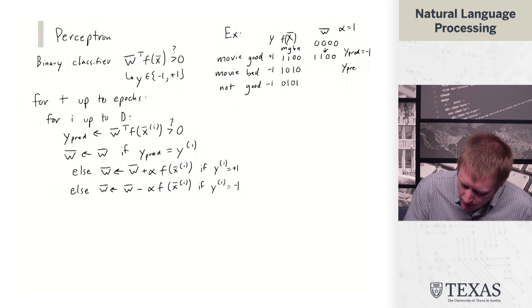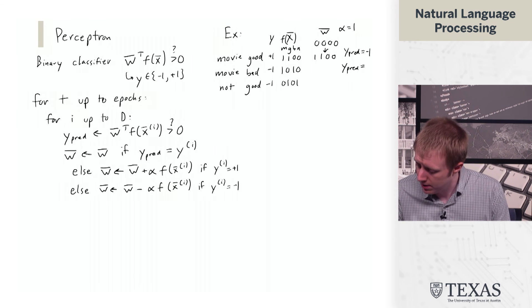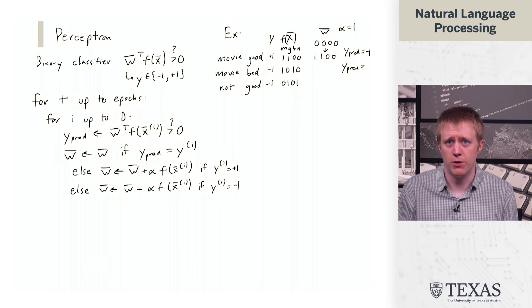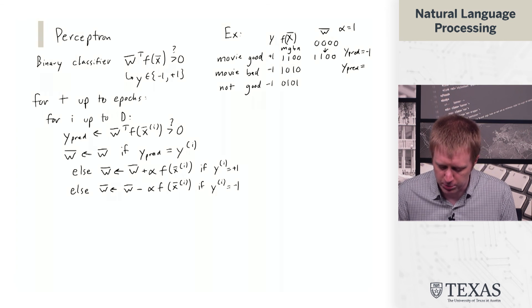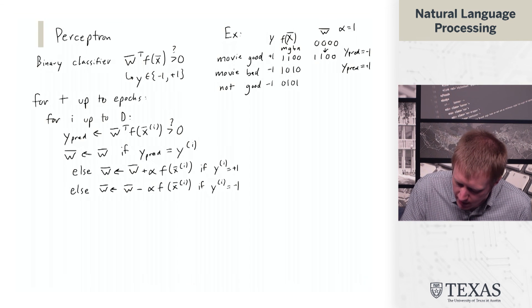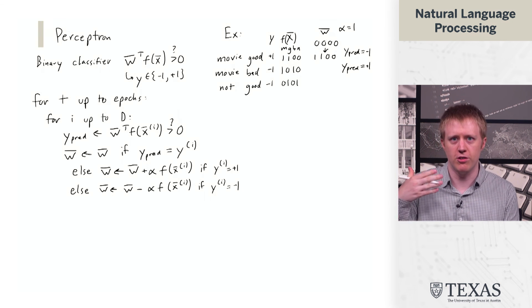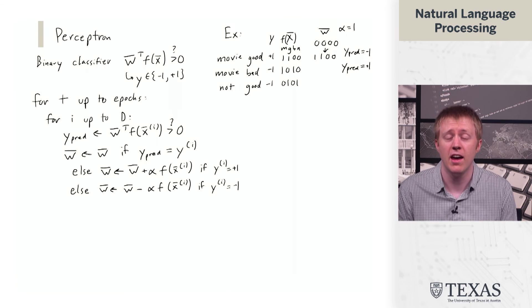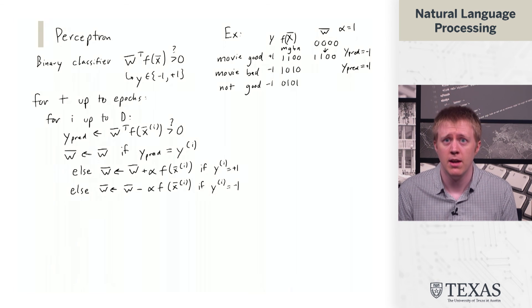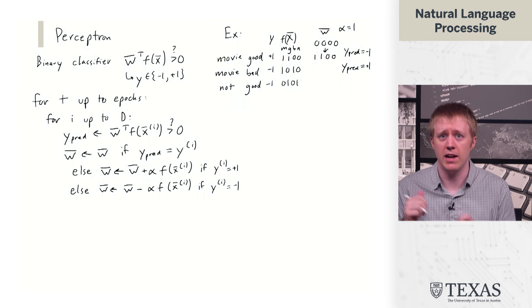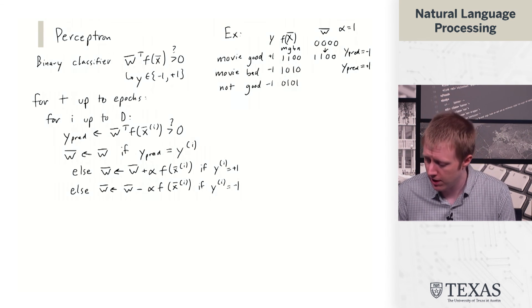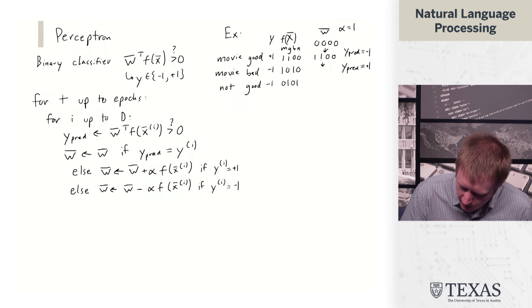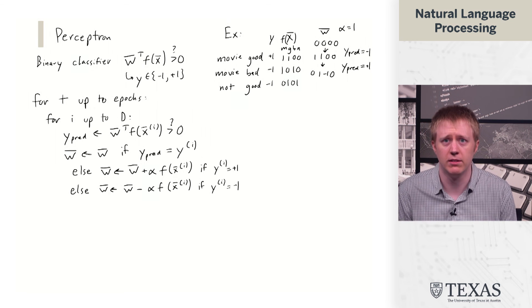We come to the second example. yPred in this case is going to be plus 1, roughly because we've learned that 'movie' is associated with positive sentiment. Okay, that's not actually right in this case, but it was a reasonable thing to learn from the first example — we don't know whether it's 'movie' or 'good' that's making it positive. So yPred is 1, the actual y is minus 1, and so we go to the second else line and subtract off the features, giving us a new weight vector.